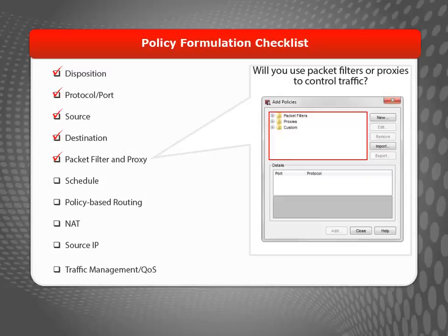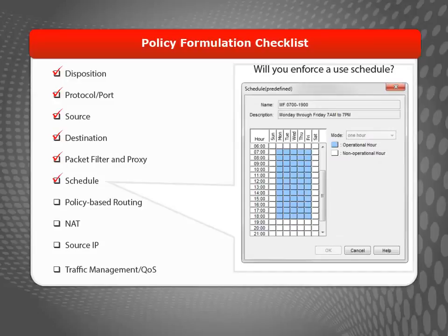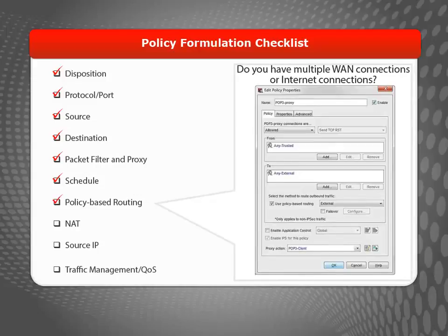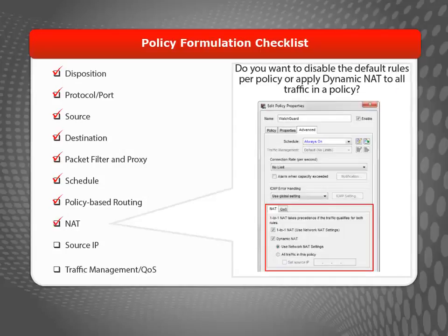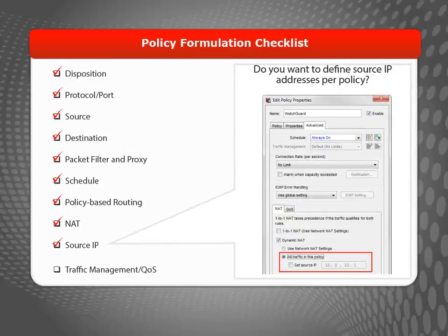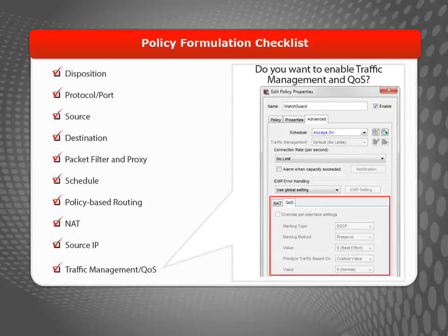Proxy policies are available as an option for TCP, SMTP, POP3, HTTP, HTTPS, and FTP connections. You can also use policies to enforce a schedule — for example, configure a policy to be operational only during business hours or only after business hours. If you have multiple WAN connections or multiple connections to the internet, you can use policy-based routing, such as routing browsing traffic to ISP1 and VPN traffic to ISP2. While policies use dynamic and one-to-one NAT rules by default, you can disable the default rules per policy, apply dynamic NAT to all traffic in the policy, and even specify a source IP address. Each policy also contains configuration options to enable traffic management and quality of service, which are more advanced options not discussed in this video.